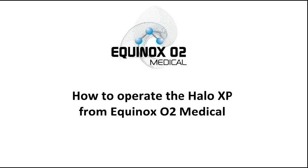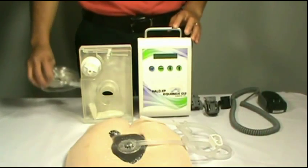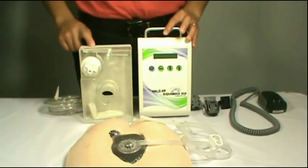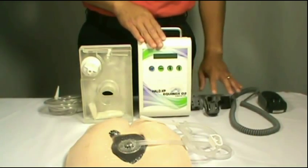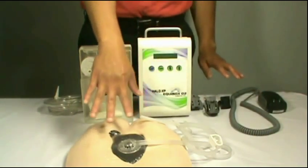How to operate the Halo XP from Equinox O2 Medical. First you will need your canister tubing, your canister, your Halo XP pump, outlet adapter, your power adapter and of course your wound.